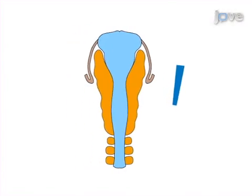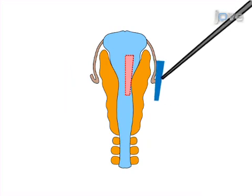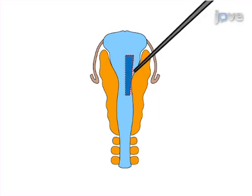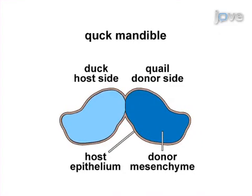The third step involves dissecting and removing the equivalent region of a stage 9.5 duck host embryo. The final step is to place the quail neural fold into the duck mid and anterior hindbrain region. Ultimately, the resulting chimeric embryos can pinpoint neural crest-mediated changes in gene expression through in-situ hybridization and can also reveal morphological changes through histological analyses.